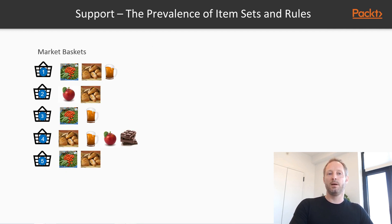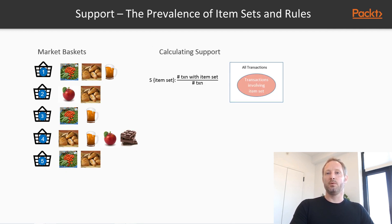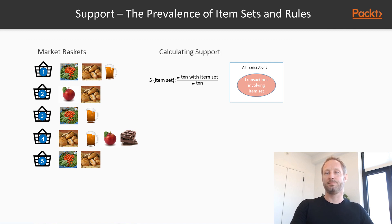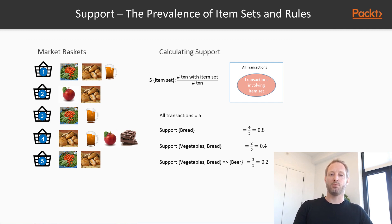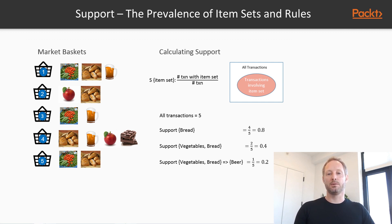Starting with support: to find support, we divide the number of transactions containing the item set or rule by the number of all transactions. In our simple example, the support for bread is 4 out of 5 transactions. The support for the item set vegetables and bread is 2 out of 5. And the support for the rule — vegetables and bread as an item set implies beer — is 1 out of 5, because those three items only occur together in the first transaction.